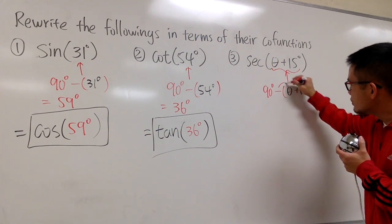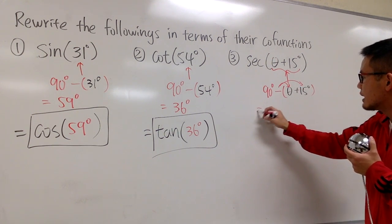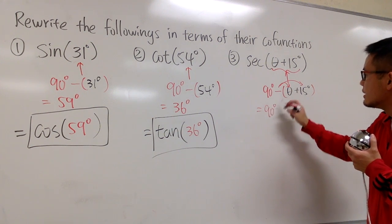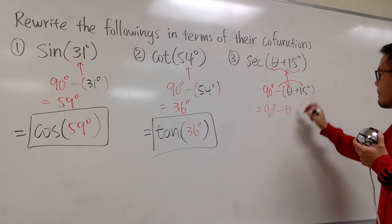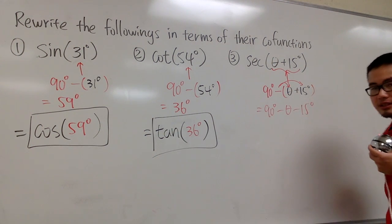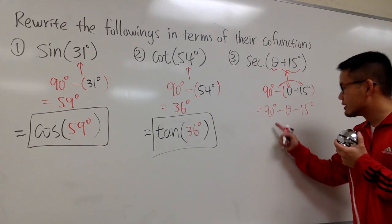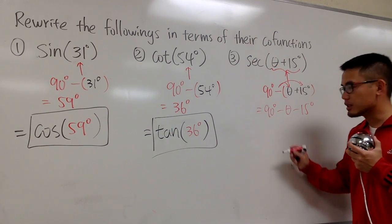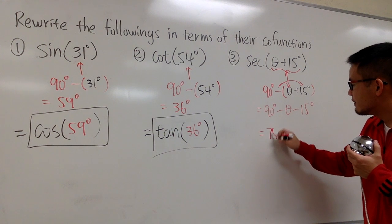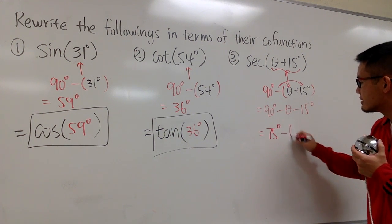And then you have to be sure you distribute the negative. So you have to work this out as 90 degrees minus theta and then minus 15 degrees. Combine the terms. 90 degrees minus 15 degrees. We can get 75 degrees and then minus theta.